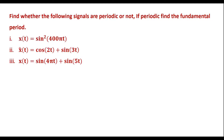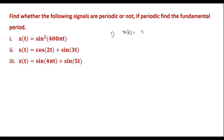Let me consider the first example: x(t) = sin²(400πt). Let me call it equation 1.